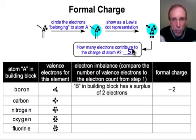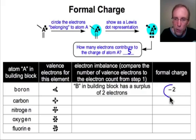If we assign atom A a particular atom type, like for example, boron with a valence count of 3, and that boron is assigned 5 electrons, then there would be a surplus of 2 electrons. 2 more electrons are assigned to that boron than its valence count. Since electrons are negative, the formal charge on that boron would be minus 2.